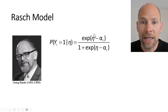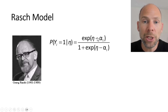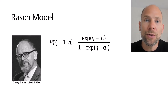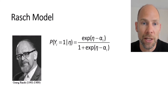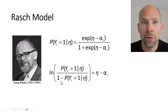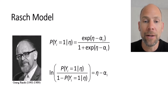Why is it called a logistic model? Because you can also express the same model equivalently in terms of the logit. A logit is the natural logarithm of an odds — the ratio of the probability of solving the item divided by one minus that probability (i.e., the probability of not solving it) — and then taking the natural log of that ratio.